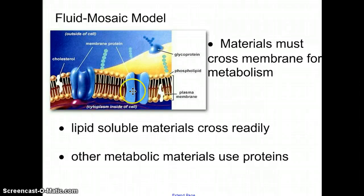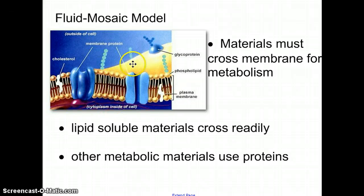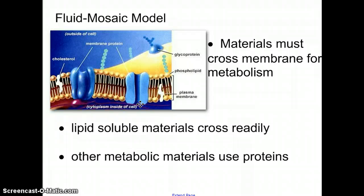You can see this protein right here — it acts as a channel. Anything that can't get through the cell membrane by itself through diffusion actually travels through the little channel, kind of like a bridge. Any material that's lipid-soluble can cross, and any other metabolic materials needed for the cell to undergo its processes has to use a protein to get across, either through active or passive transport.